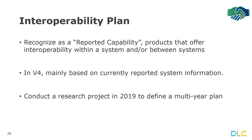Next I'll talk about interoperability. We're proposing a new plan which is fairly basic at this stage. As a first step, we want to recognize interoperability as a reported capability. This year that'll be mainly based on information we're already collecting and reporting — we just want to rearrange it a little to emphasize which parts are related to interoperability. We're also in the midst of planning a research project for 2019 to help define a multi-year plan in more detail.